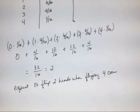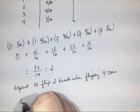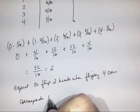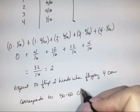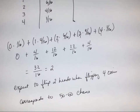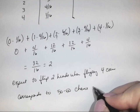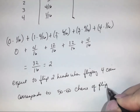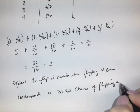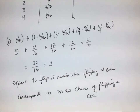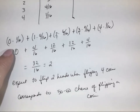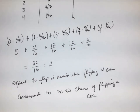This corresponds to a 50-50 chance, which is what we talked about in the beginning. If we flip a coin, it has two sides, so we'd expect heads half the time and tails half the time. By multiplying the number of heads by the probability, we can see that we'd expect two heads out of four flips.